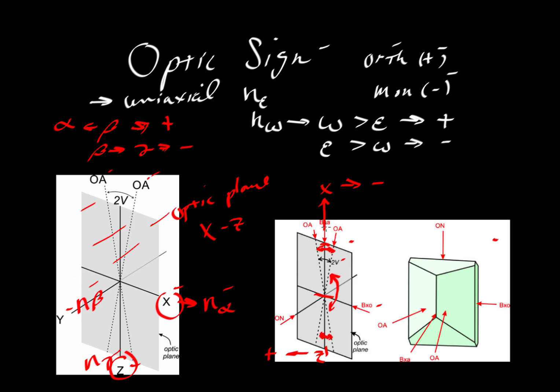Which direction, x or z, bisects the acute 2V? Here we're not worried about the obtuse angle—we're only interested in looking down the Bxa. Is that acute angle bisected by z? If it is, the mineral is positive. If it's around x, the mineral is negative.